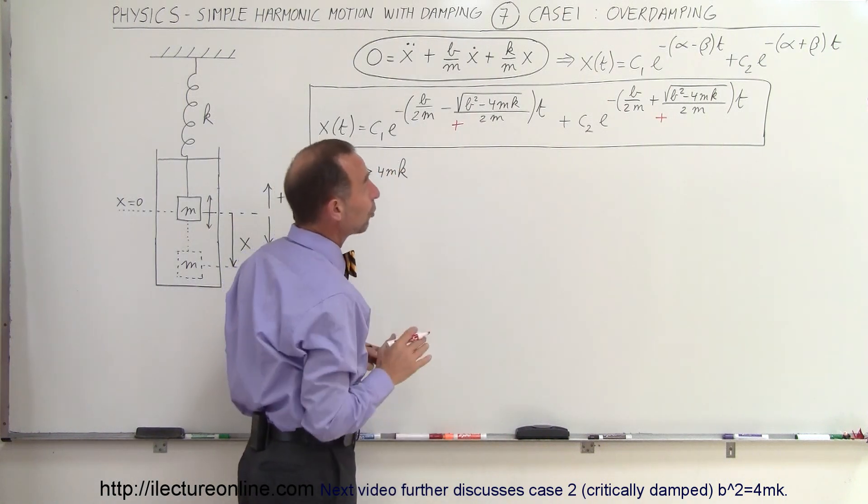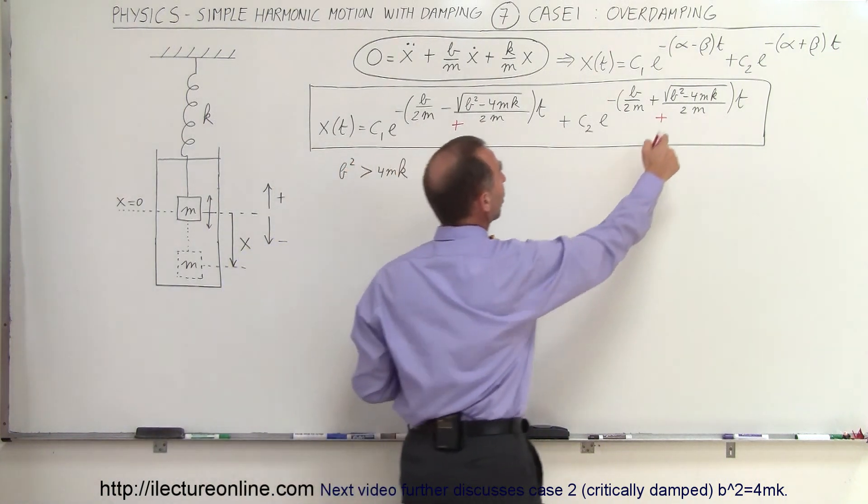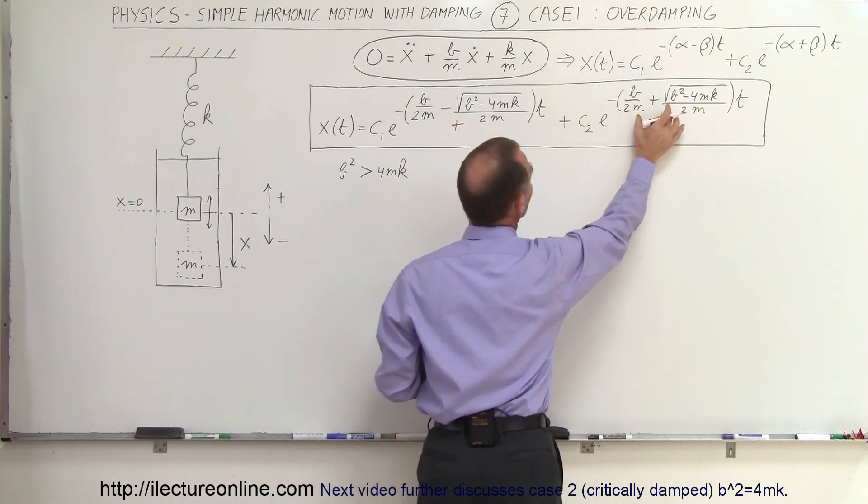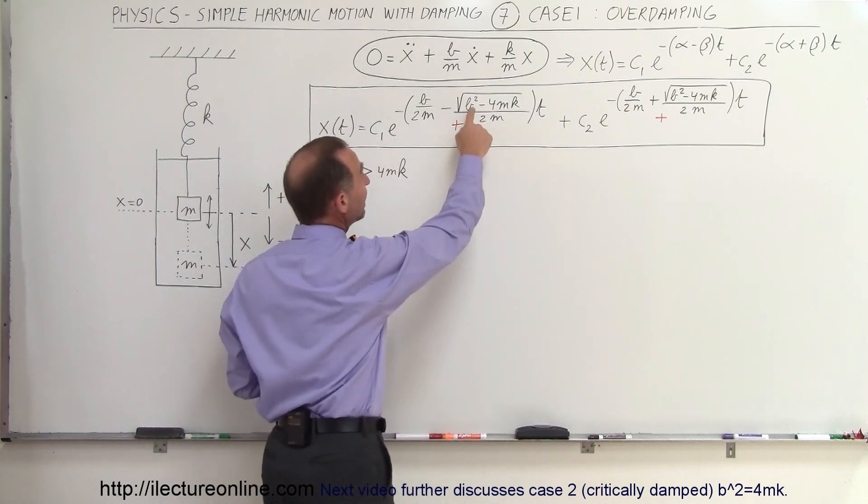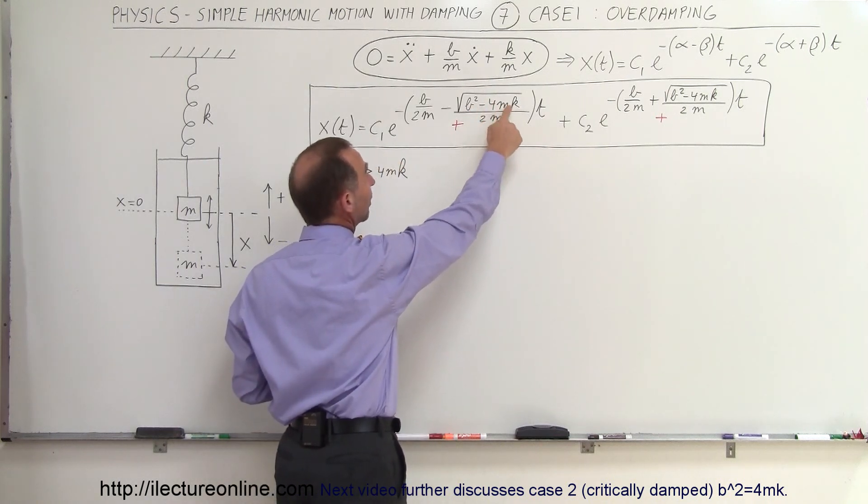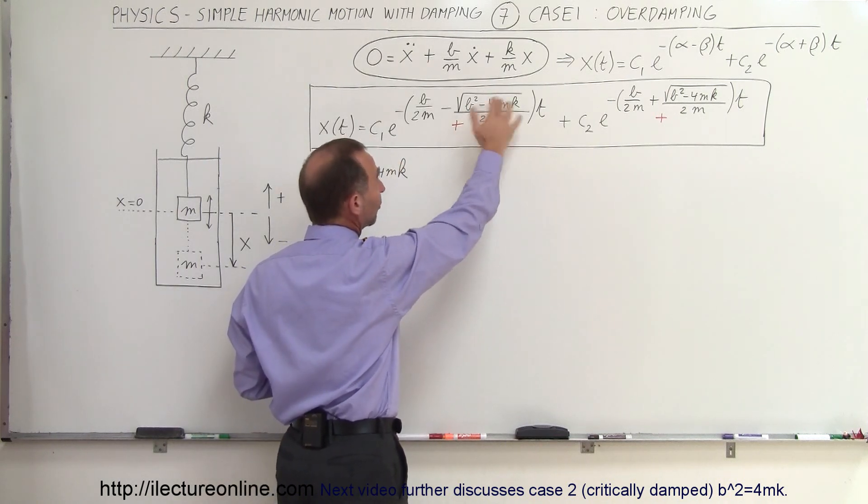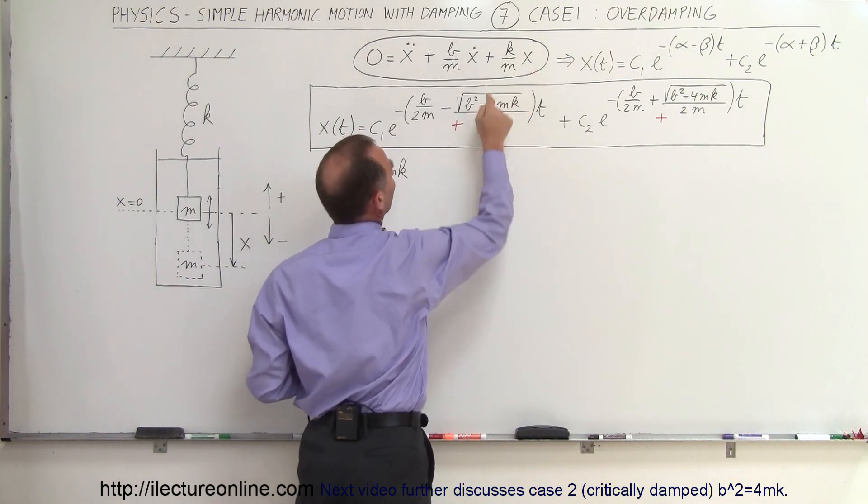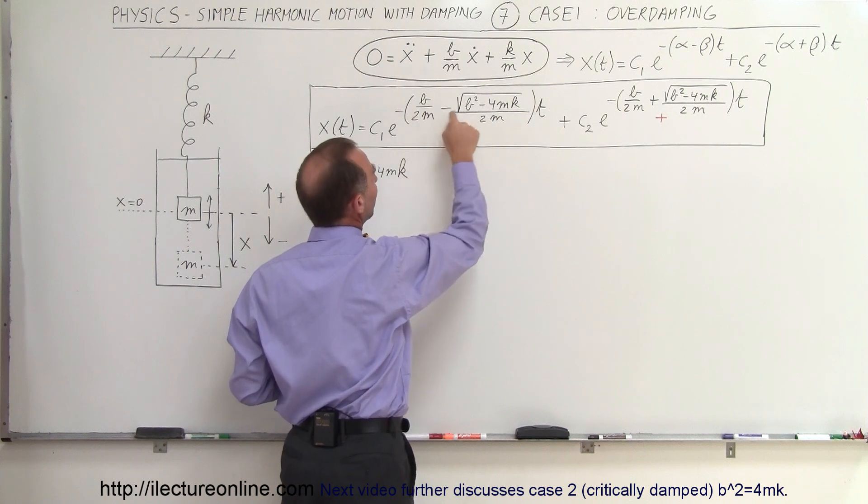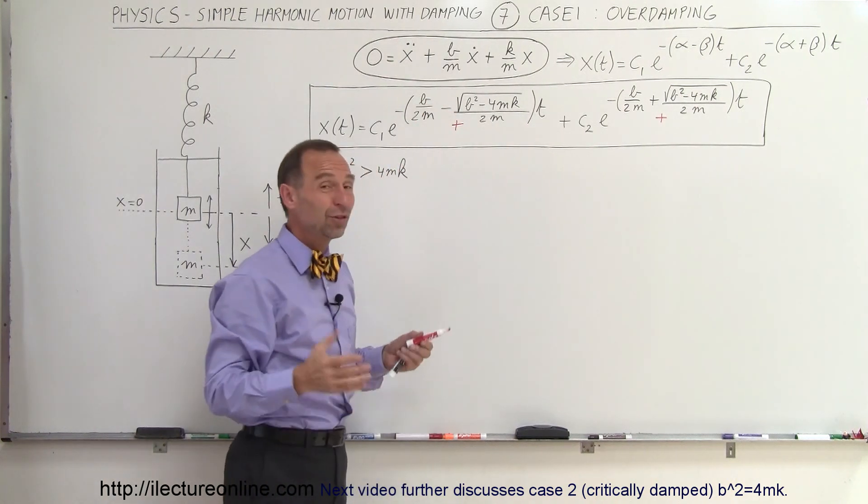Comparing those two exponents to one another, notice that this will be a larger exponent than this one, because here they're added and these are subtracted from one another. And matter of fact, if B is very large compared to 4mk, or B squared is very large compared to 4mk, then this can be pretty well ignored, the 4mk portion. And then it'll basically be B over 2m minus B over 2m, which is almost zero.